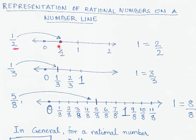This point here shows 1/2 — that is how we represent one-half on a number line. Remember, one can be written as 2/2, essentially two parts out of two parts. The distance from zero to one is divided into two equal parts.